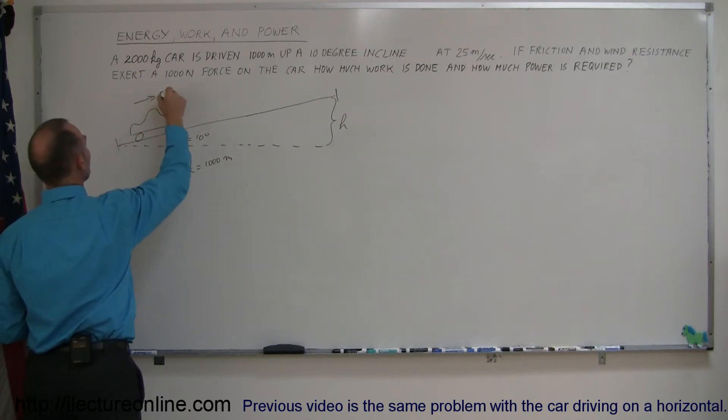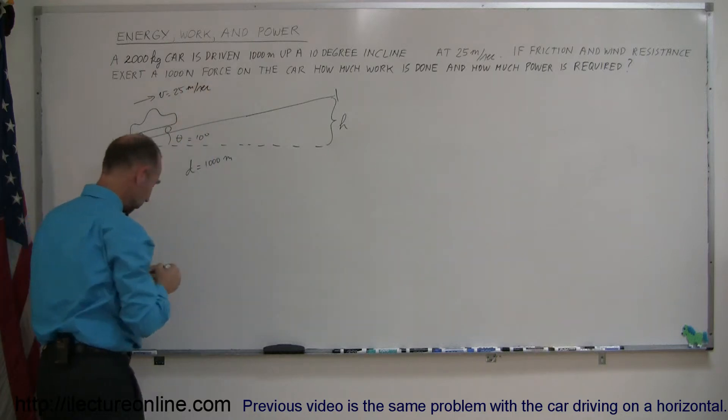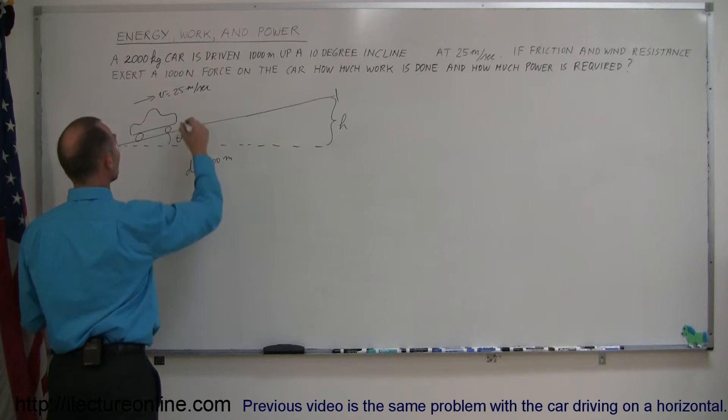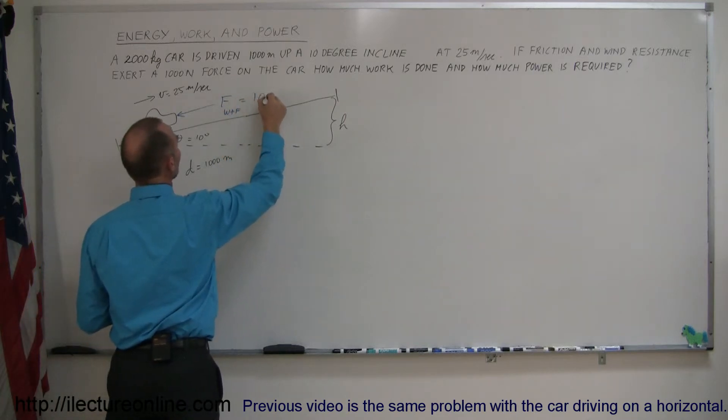It's moving up with a velocity equal to 25 meters per second, and it's experiencing some forces here. We have wind and friction resistance. So, the force due to the wind plus the friction is equal to 1,000 Newtons.